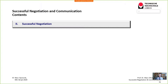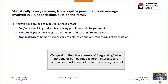Welcome to another session of our course on successful negotiation and communication at the University of Lübeck in cooperation with the Technical University of Lübeck. We've finished talking about the basics of communication — the underlying psychological and sociological concepts such as the Schultz von Thun model, Watzlawick's axioms of communication, the transactional analysis of Dr. Berne, cognitive dissonance, behavior effect, and motivation theory. Now we arrive at the main part: successful negotiation.